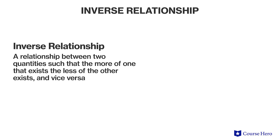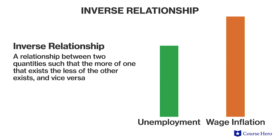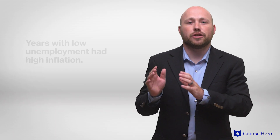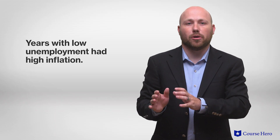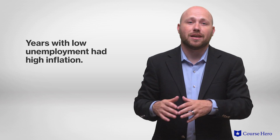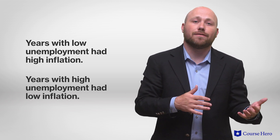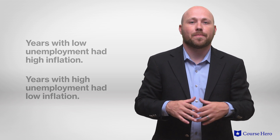An inverse relationship between two quantities means that the more of one that exists, the less of the other exists, and vice versa. Phillips observed that years with low unemployment tended to have high inflation, and years with high unemployment tended to have low inflation.